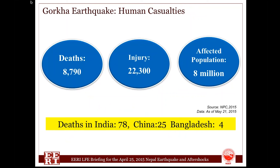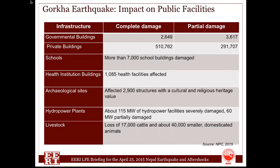There are also reports of casualties from India, China, and Bangladesh. Private buildings, public facilities, and infrastructure are also badly damaged in several districts. More than 6,000 government buildings have been damaged severely, more than 500,000 private houses completely damaged, and around 200,000 houses partially damaged. Moderate to heavy damage to other infrastructure also occurred.